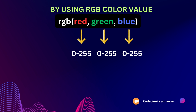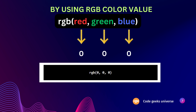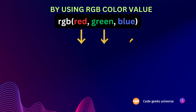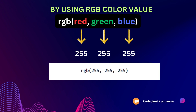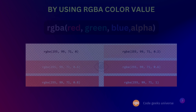If you want to display the color black, you can achieve this by setting all color parameters to zero — for example, rgb(0, 0, 0). On the other hand, if you want to display white, simply set all color parameters to 255: rgb(255, 255, 255). To define shades of gray, it is common to use equal values for all three light sources, meaning the intensity levels of red, green, and blue are set at the same level.